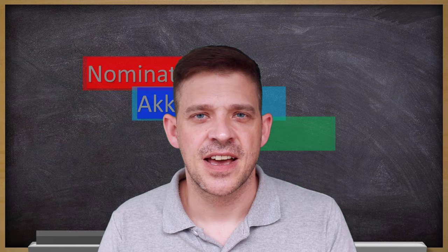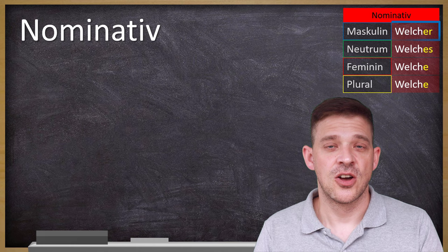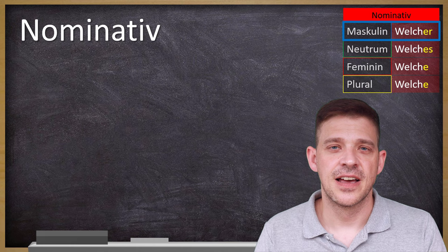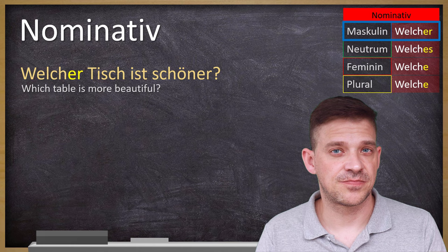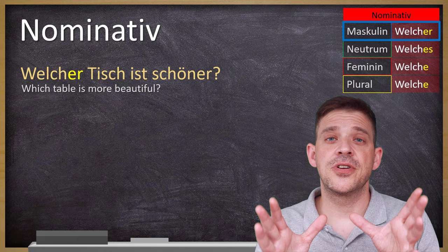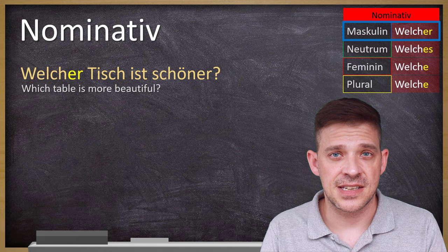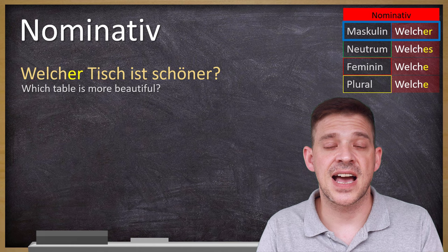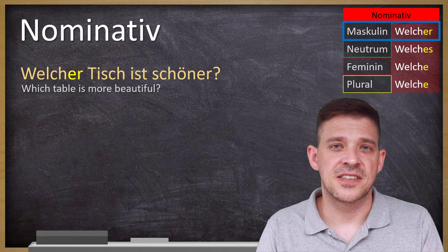First though, we go into detail and start with the Nominativ case. On top you can see all the different endings in Nominativ. We start with an example in Maskulin: Welcher Tisch ist schöner? — Which table is more beautiful? This is very common when you compare something. Why is it Nominativ? Because Tisch is the subject, and the subject is always Nominativ. And Tisch is masculine, therefore you use the ending -ER: Welcher Tisch.